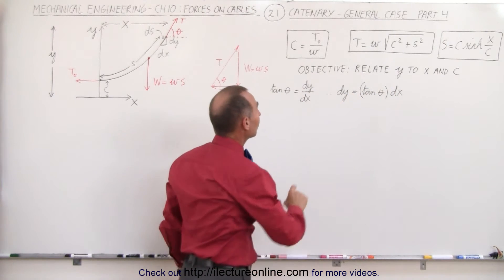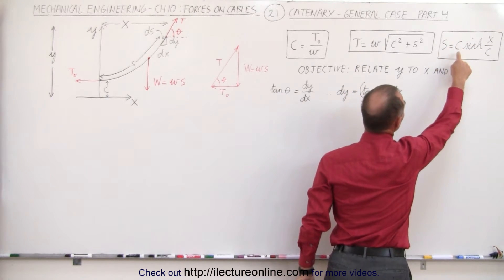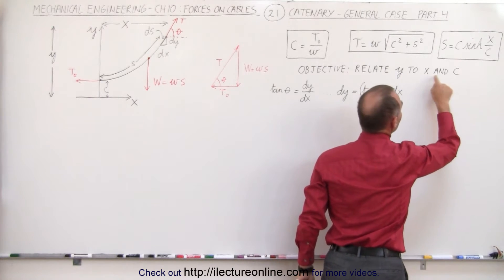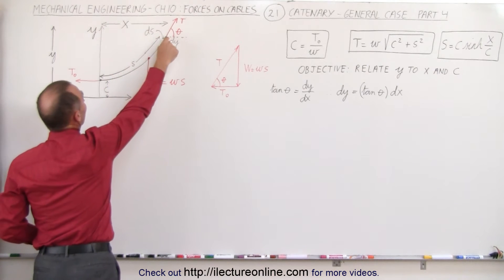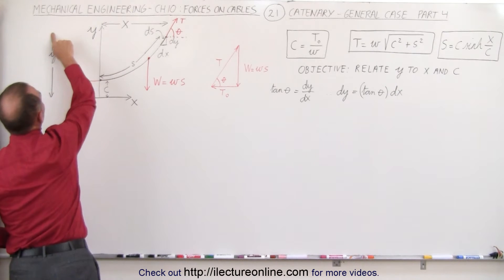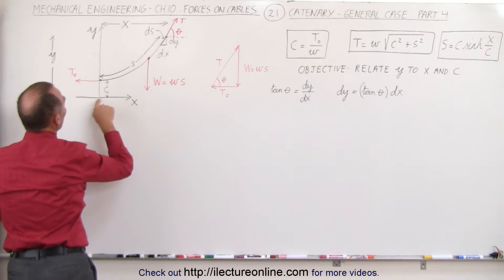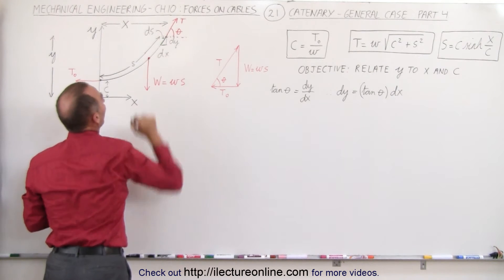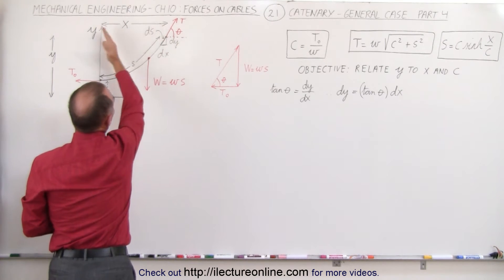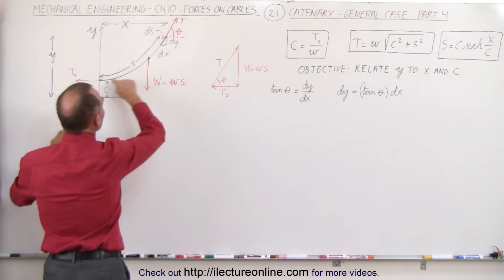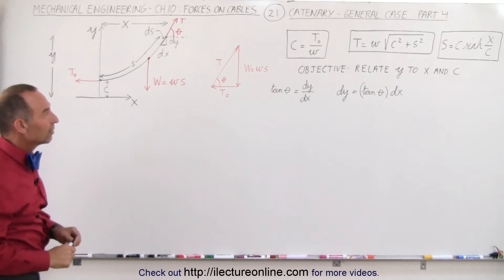The objective of this video is to relate Y to X and C. We have the relationship between S, X, and C. Now we want the relationship between Y and X and C, because after all, we need to be able to calculate the distance Y from the point of attachment. Y is the distance from the origin to the attached point, and X is the distance from the origin to the attached point in the horizontal direction. We also need to relate that to the length of the cable, C, the tension, and the weight of the cable.